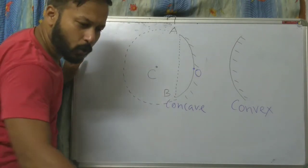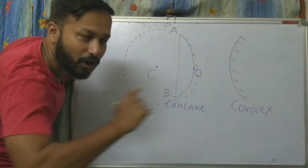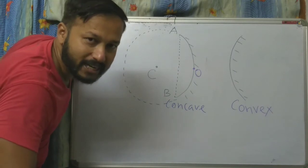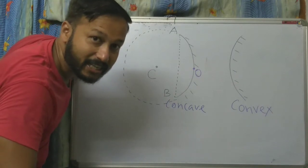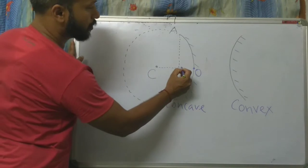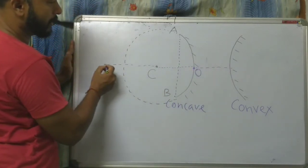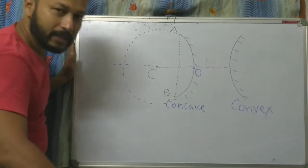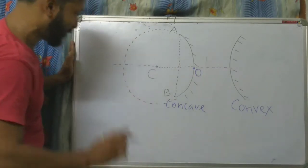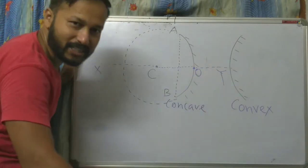Now I am drawing a straight line which passes through the optical center O and the center of curvature C. This straight line is called the principal axis, labeled X-Y.